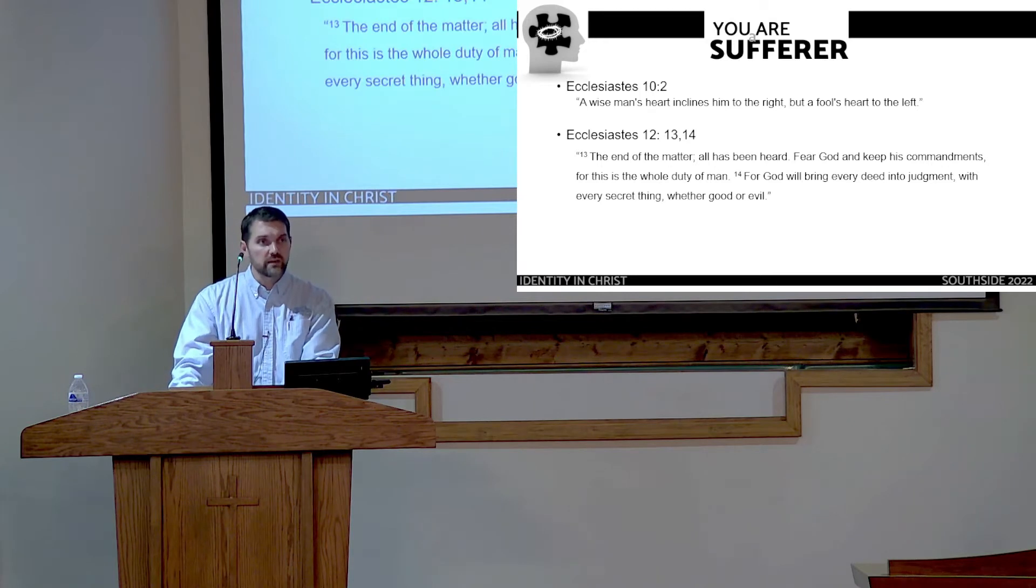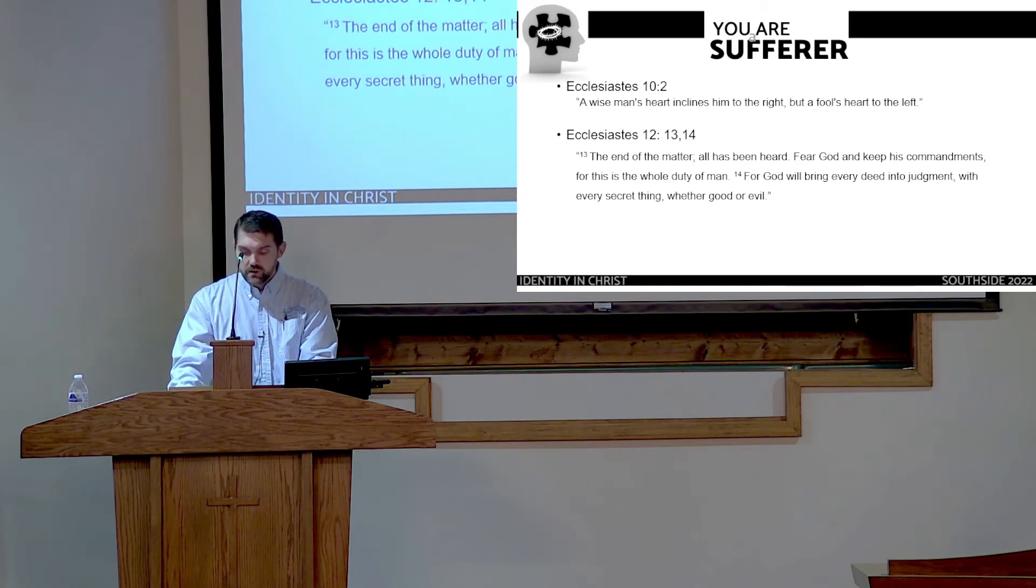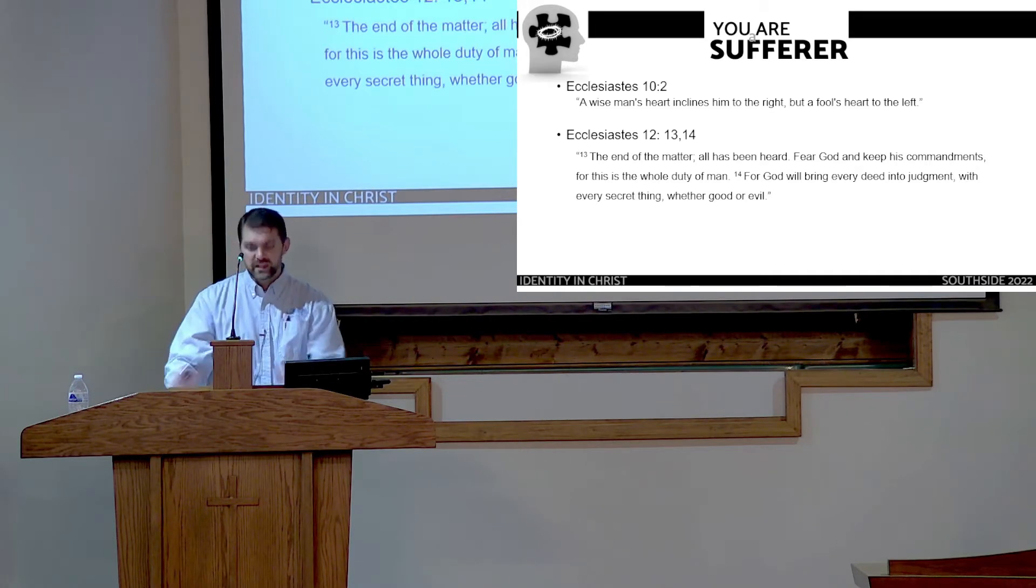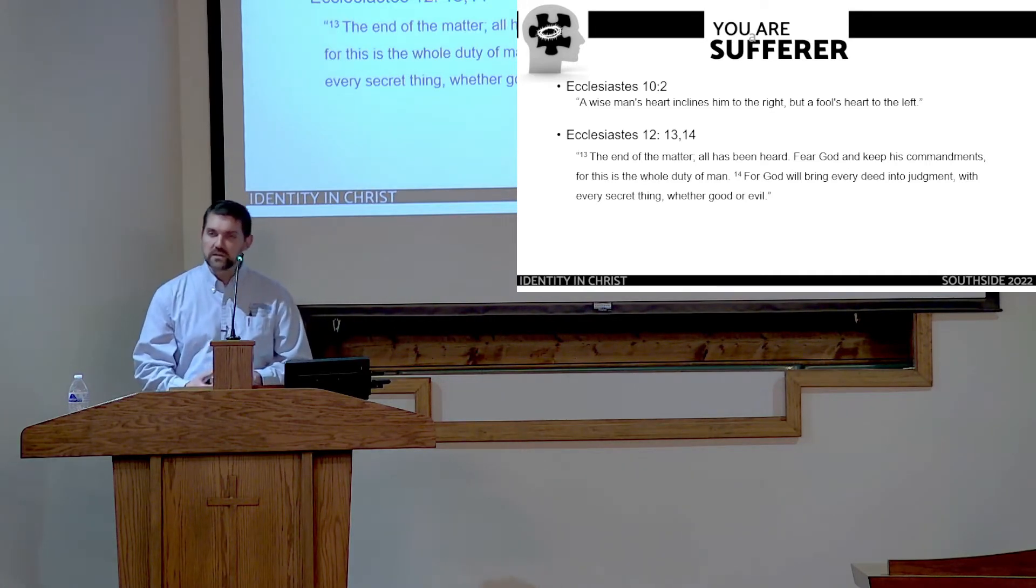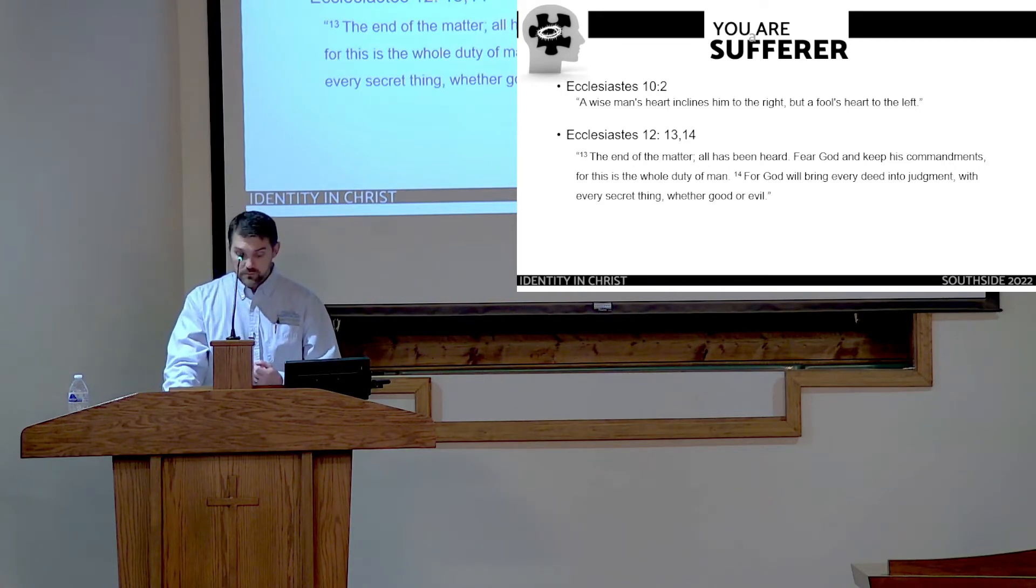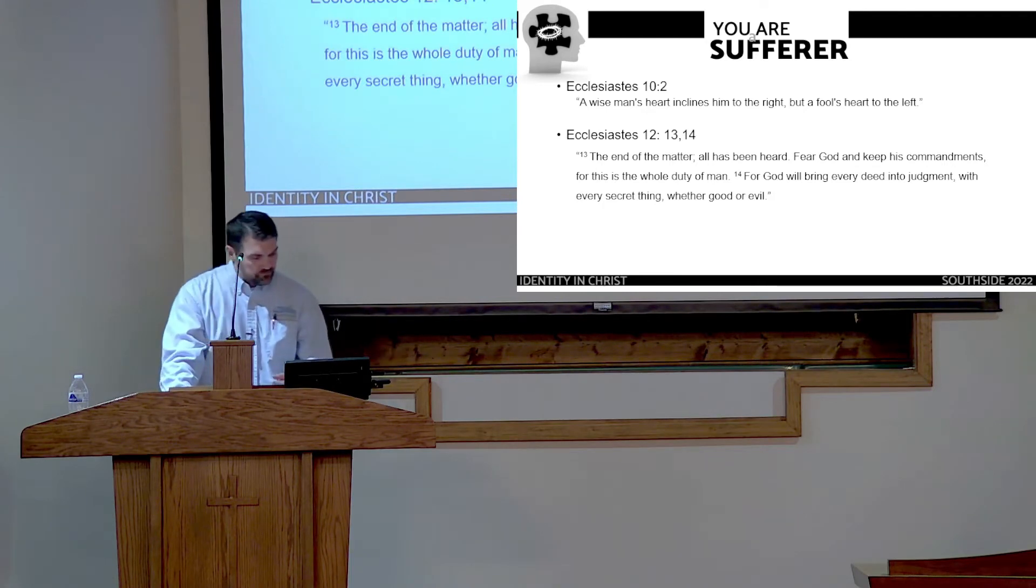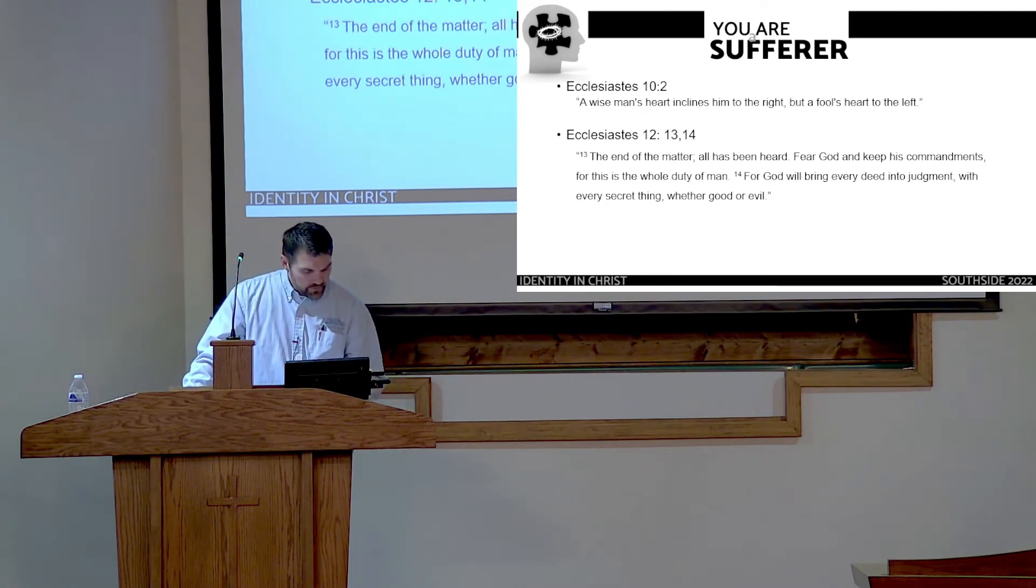In Ecclesiastes, we see examples of the wise and the foolish. In chapter 10 verse 2, we have these words. A wise man's heart is at his right hand, but a fool's heart is at his left. The choices we make in life are what drives us down the paths of life. We can look all around us and we can see the injustices and we can see the unfairness, the cheating. We can see the consumption of the world around us because of sin. And that's just the way it is. So how is a Christian to be different?